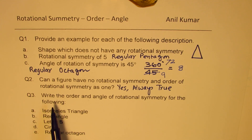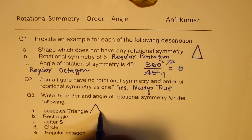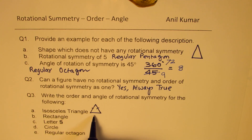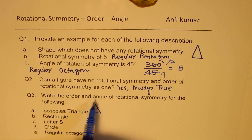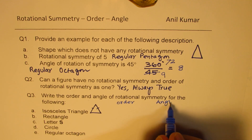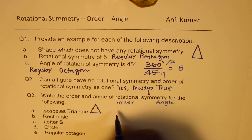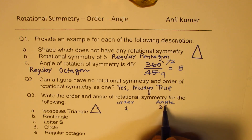Question number 3: write the order and angle of symmetry for the following. Isosceles triangle has two equal sides and one unequal side. When you rotate it, it will never match itself before a full turn. However, when you complete the full circle, it does match itself. So the order is 1 and the angle is 360 degrees.